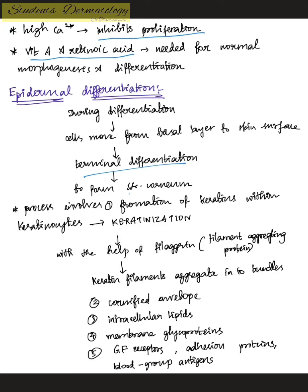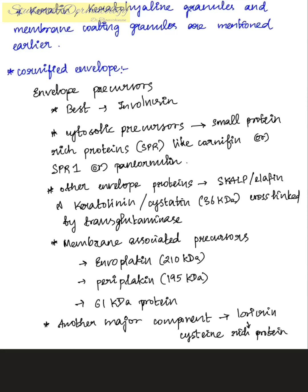During epidermal differentiation, cells move from the basal layer to the skin surface and undergo terminal differentiation to form the stratum corneum. This process involves five steps. The first is keratinization — the formation of keratin within keratinocytes — which takes place with the help of filaggrin, the filament-aggregating protein. The second is cornified envelope formation, involving precursors like involucrin and cytosolic precursors like SPR1 (pancornulin).